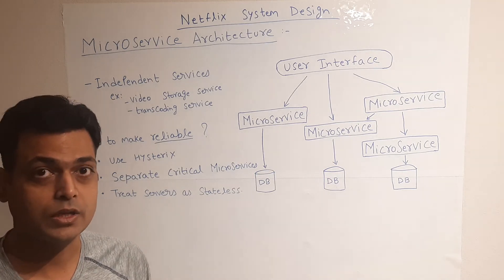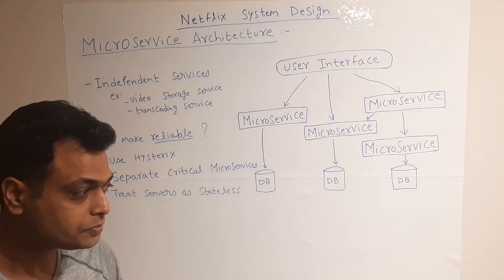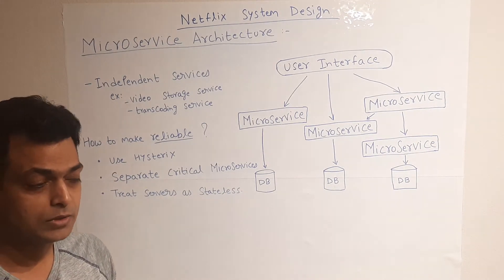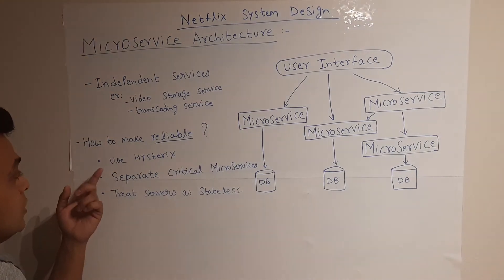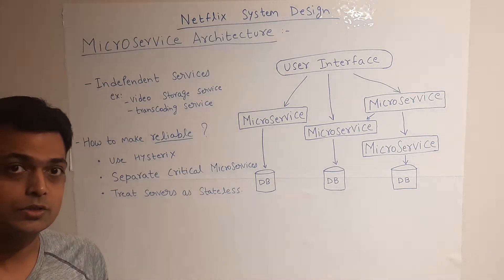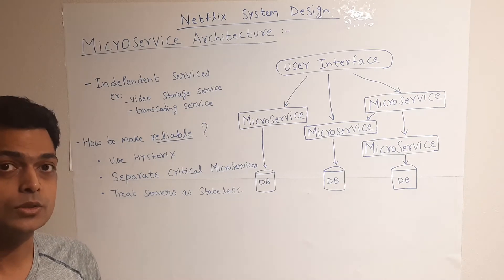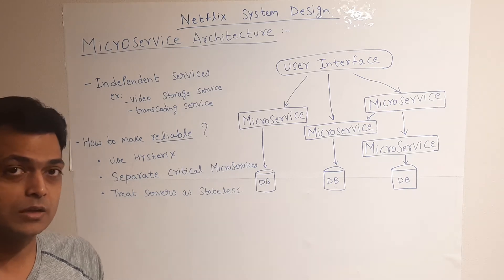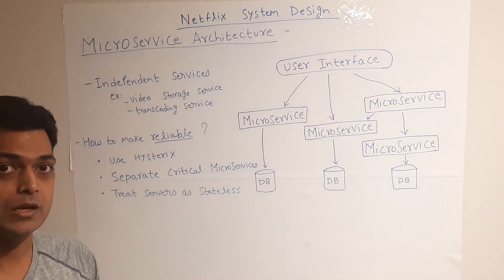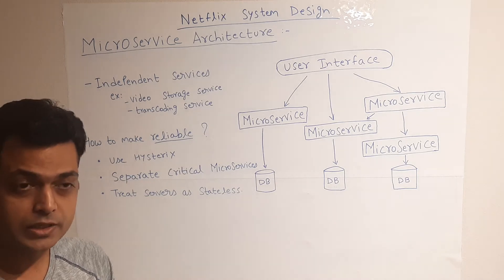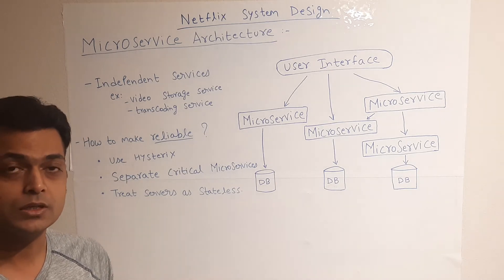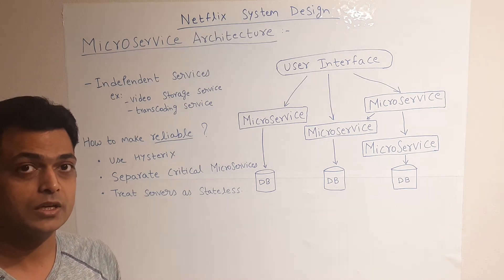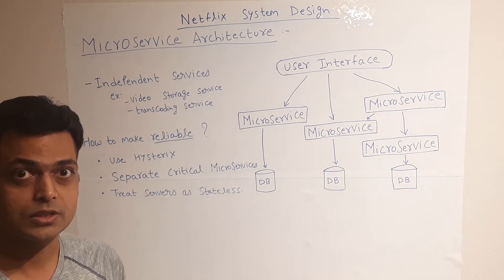Some microservices can work all by themselves without any dependency on others. Now, how do we make this microservices architecture reliable? The first approach is the usage of the Hystrix library. I have another video linked in the description — the Hystrix library is basically a library which takes care of maintaining multiple microservices, handles any delays, and adds fault tolerance logic.